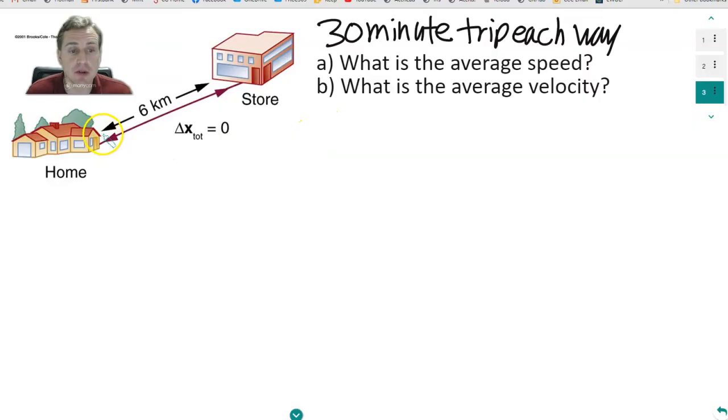Let's think of a simple example. Suppose the distance between home and the store is 6 kilometers. It takes 30 minutes to get to the store each way. I want to know what is the average speed, and then b, what is the average velocity. Let's assume we go from home to store and then back immediately.